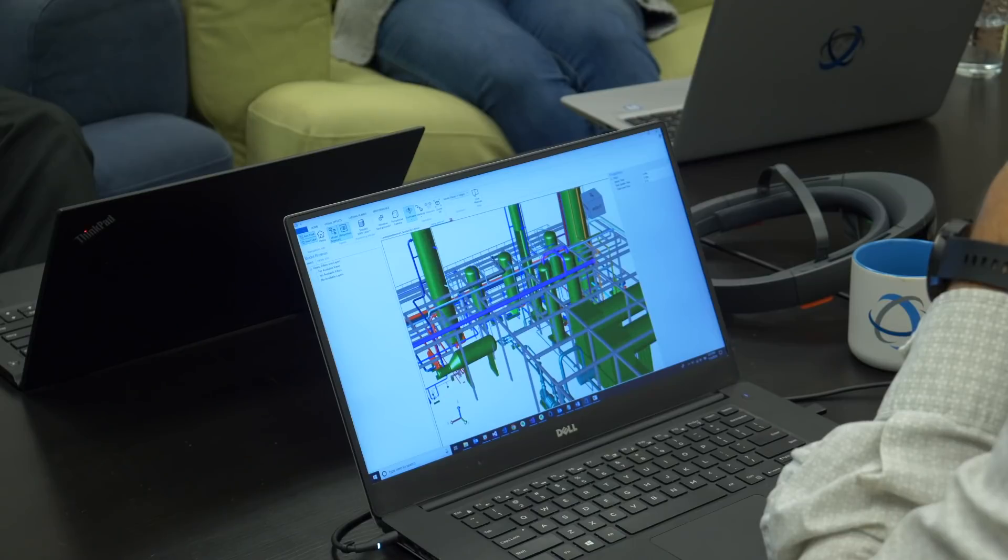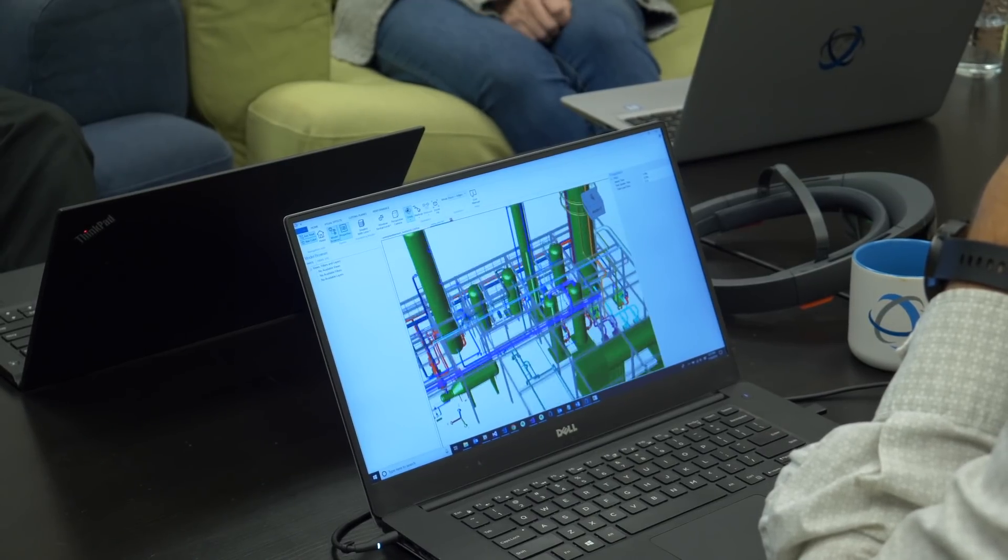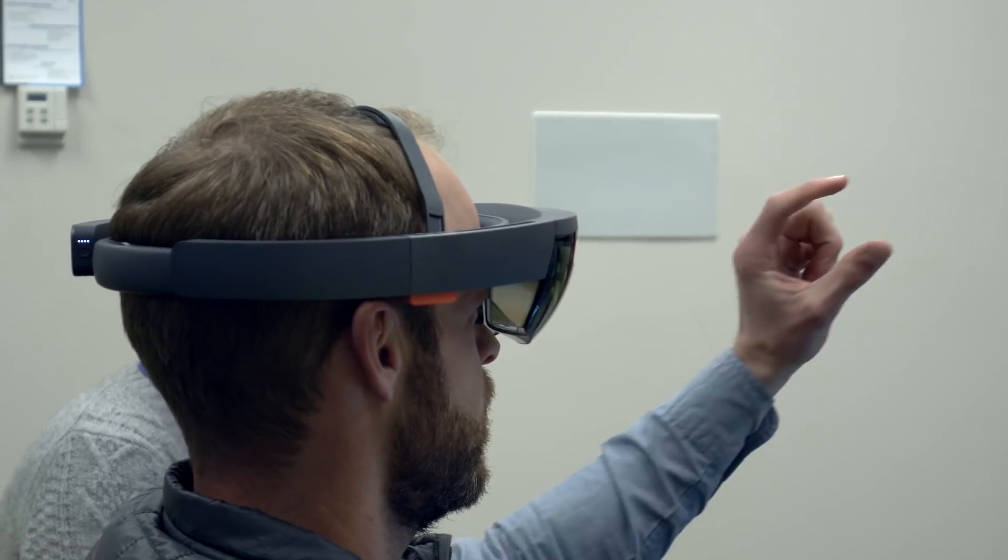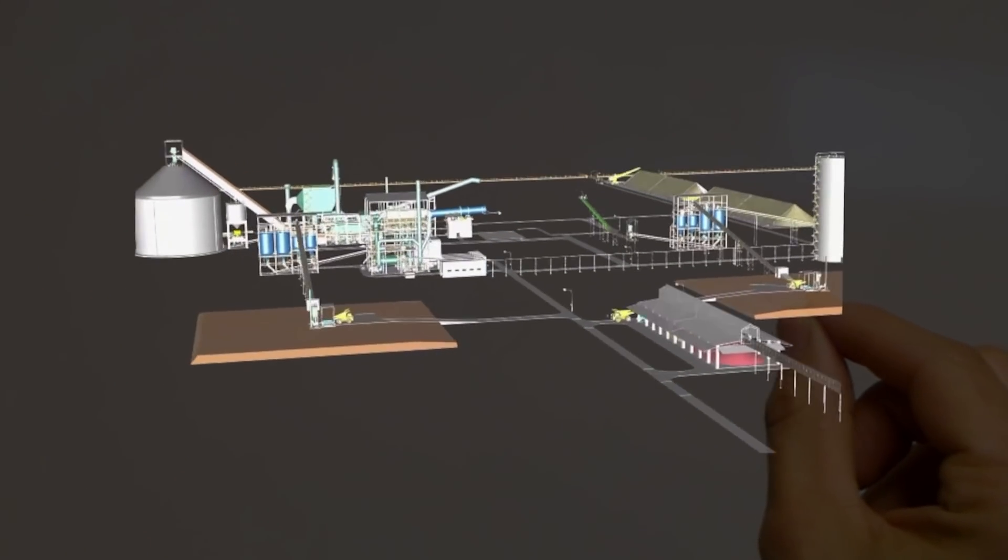The abilities of Hoops Visualize pick up where other graphics engines leave off. The performance requirements for a useful XR experience are high. This demands a powerful graphics engine capable of high frame rates for even the most complex models.